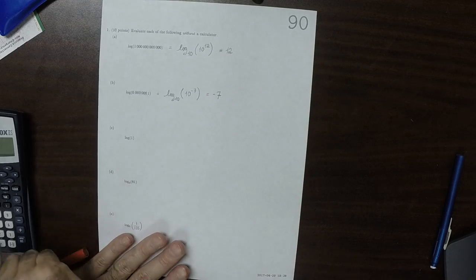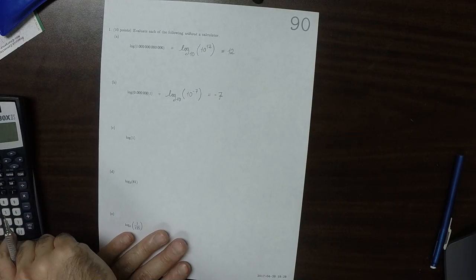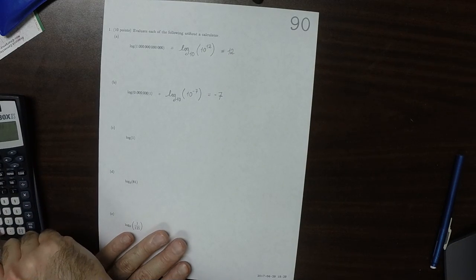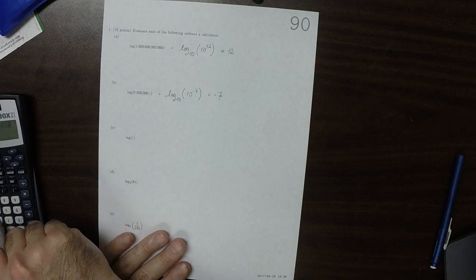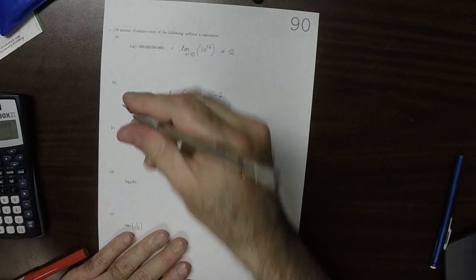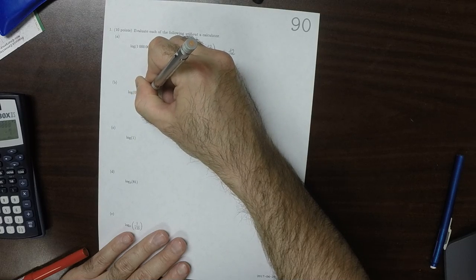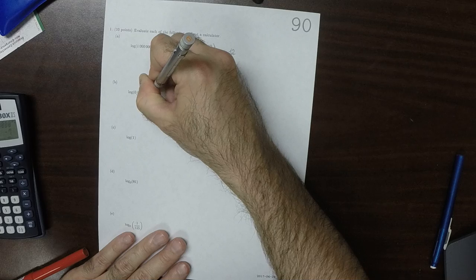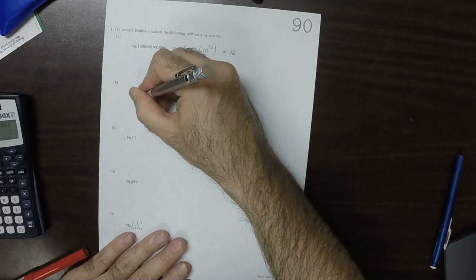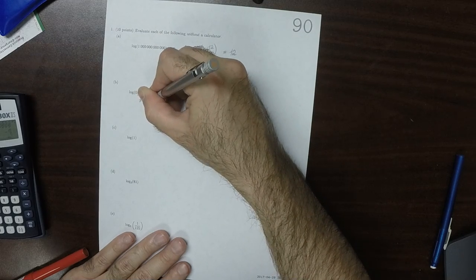Let's check that with the calculator. Log of 0.1234567, because it's 1, 2, 3, 4, 5, 6, 7. Seven to the right.